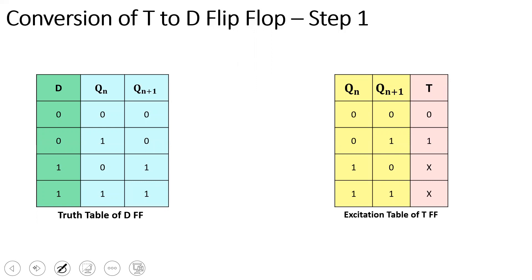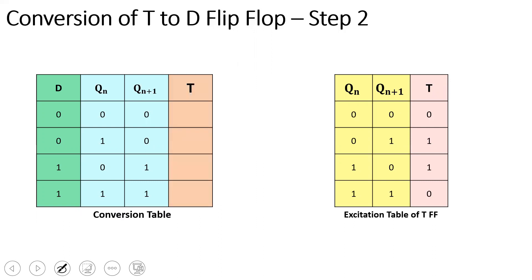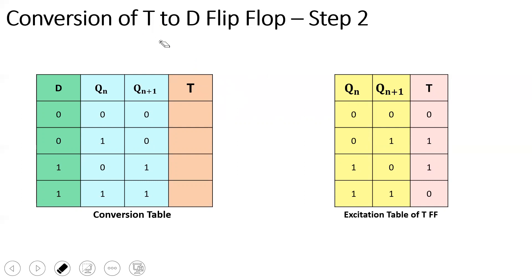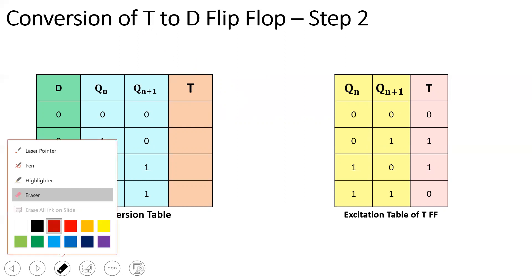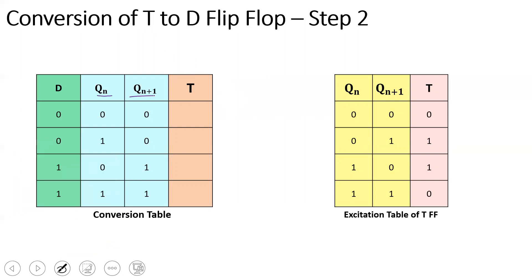Step 2: I will create a conversion table, which is an extended truth table. The source is T, so the input column is T. You write a column for the source flip-flop input T. The conversion table has present state and next state columns. The excitation table shows present state and next state.